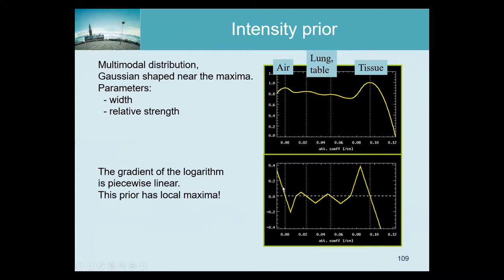In transmission tomography this was used earlier than in emission tomography, because in transmission tomography we have a lot of prior knowledge that is relatively easily written down explicitly. For example, if you're scanning a patient you have air, soft tissue, the patient table — which has attenuation somewhere between tissue and air — and lung, which is typically about one-third of tissue attenuation. So we can make a distribution with local maxima for values we like, meaning values at the local maxima are encouraged and all other values are discouraged.